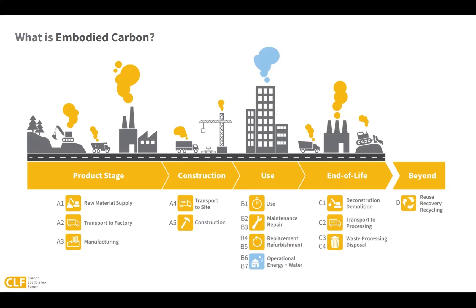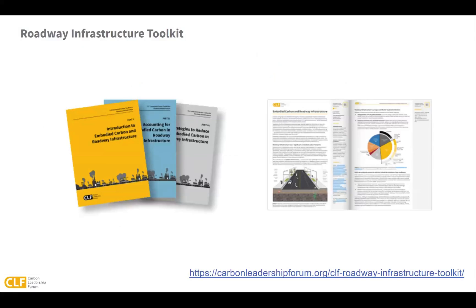Finally, at the end of the useful life of a building, greenhouse gas emissions also arise from building demolition and waste processing. For this training series, we're focused on buildings. However, embodied carbon is a term used to represent the greenhouse gas impacts of construction materials used in any application, including pavements and infrastructure projects. On CLF's website, you'll find an embodied carbon toolkit for roadway infrastructure, which helps explain these concepts in more detail for infrastructure projects. Generally, the measurement, reduction strategies, and even policy measures can be very similar between both building and infrastructure projects.